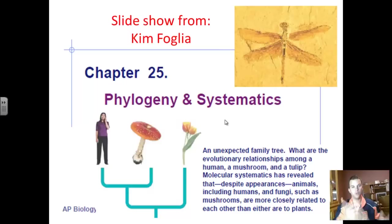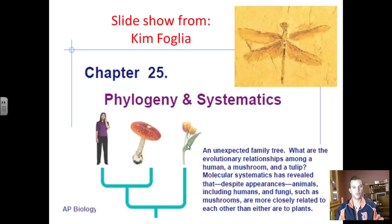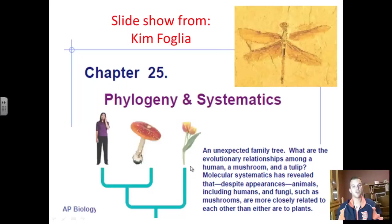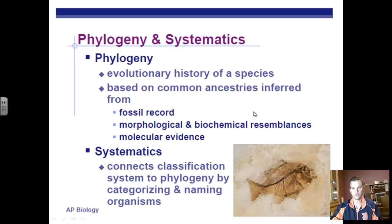Phylogeny and systematics are really about the establishment of family traits and how organisms are related to one another. When you look at a mushroom and a flower, they appear very similar — they both grow from the ground and take in water through roots. However, now that we have better technology and can look at molecular similarities, we find that fungi are actually more closely related to humans than to plants. Studying similarities in molecular structures — primarily DNA and RNA — is what we put into the categories of phylogeny and systematics.